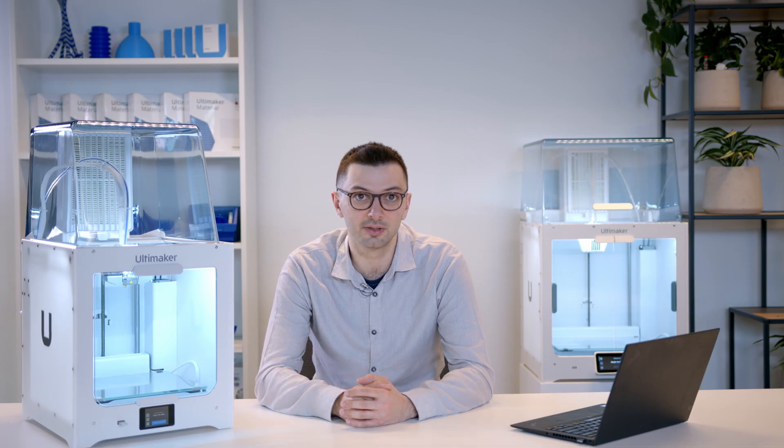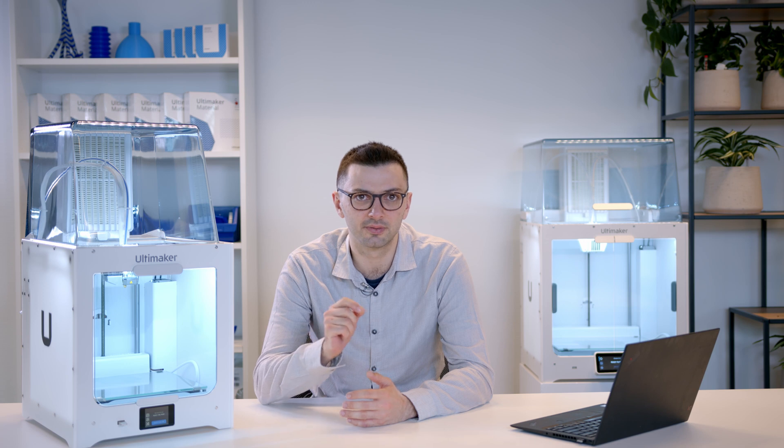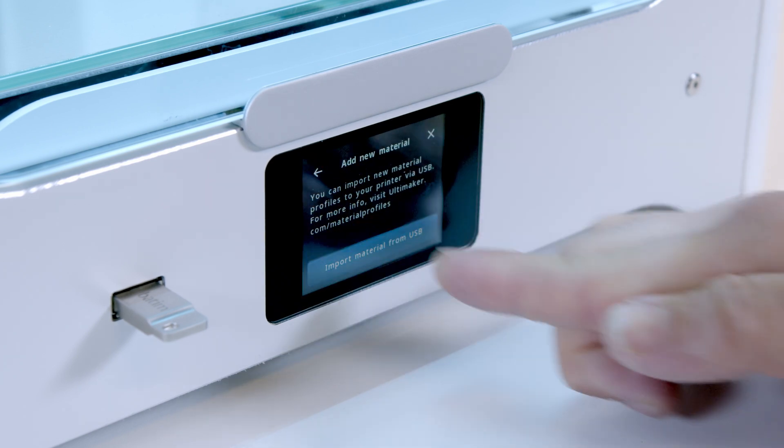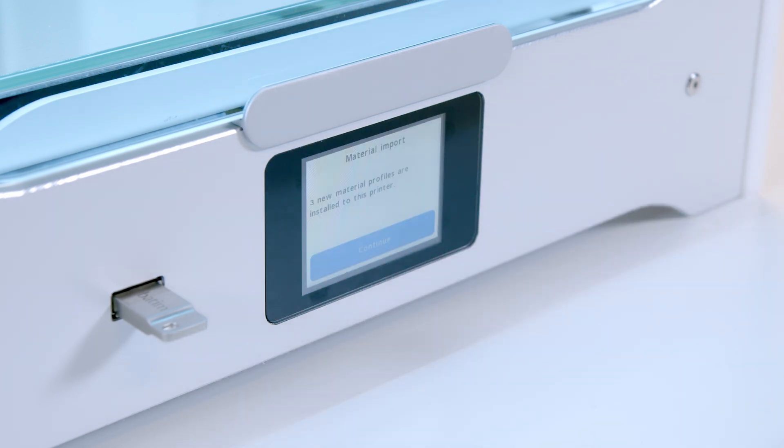Simply slice a print job for the Ultimaker 2 Plus Connect and the material profile information will be contained in the sliced UFP file. Import the material profile to the printer, load the material and start your print job.